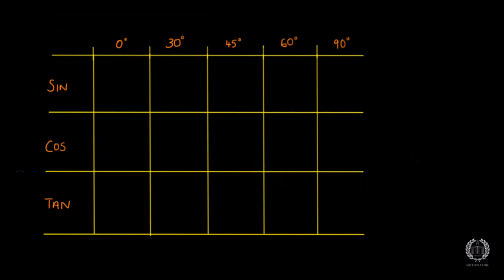There are two methods of doing this. One uses a triangle method, but I think that's a bit too long. This method is just a quick table method — a quick way for you guys to visualize and memorize how to get the values for these angles. If you have any questions after this, just put them in the comments and I'll help you out. If you find this video helpful, please give it a big thumbs up.